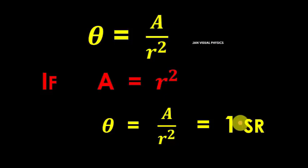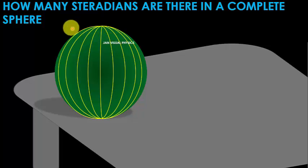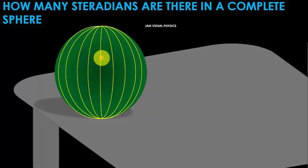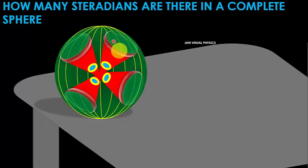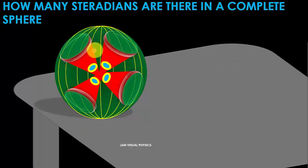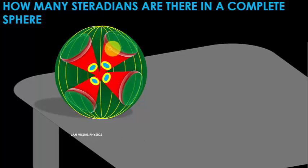Using this relation, you have to find how many steradians are there in a complete sphere. If you get a cone of one steradian, then a second cone of one steradian, then a third cone of one steradian, and so on — how many cones each of one steradian will you get in a complete sphere? In other words, how many cones each of one steradian are there in a complete sphere? Write your answer in the comments.